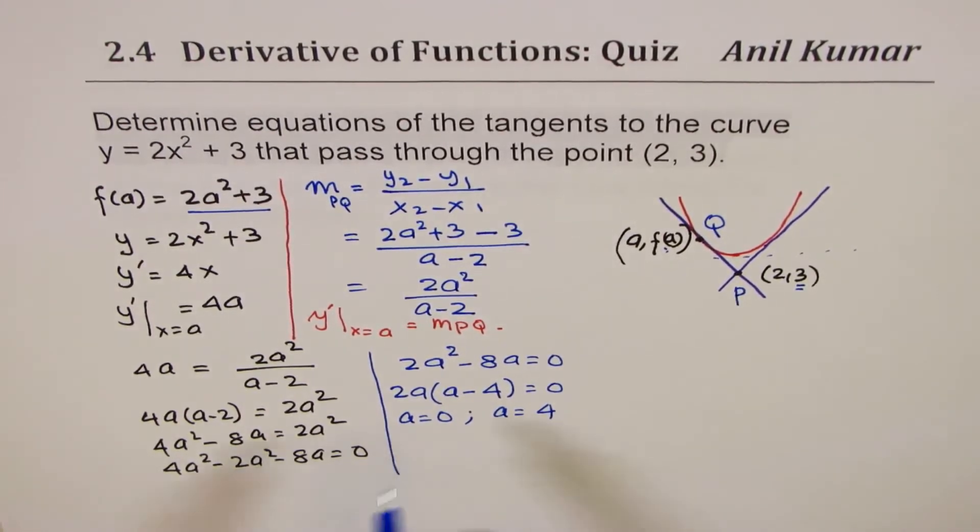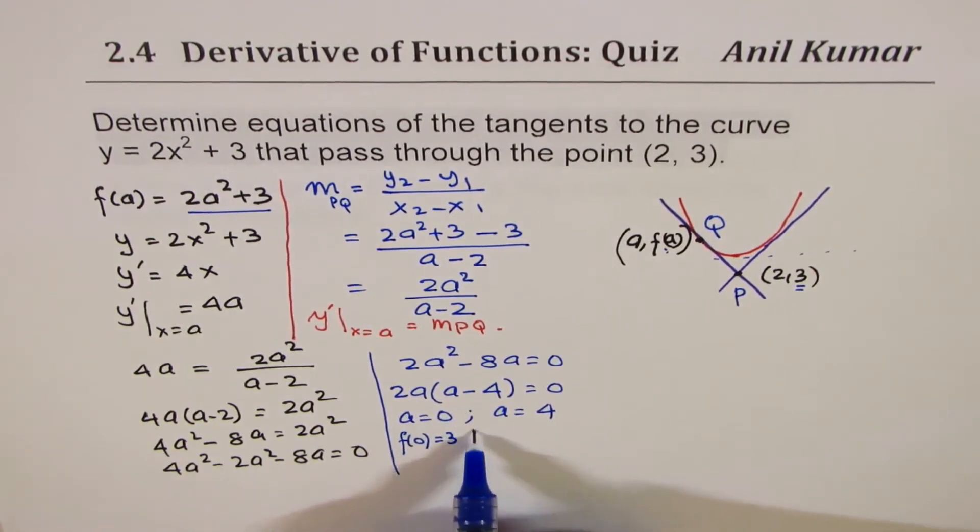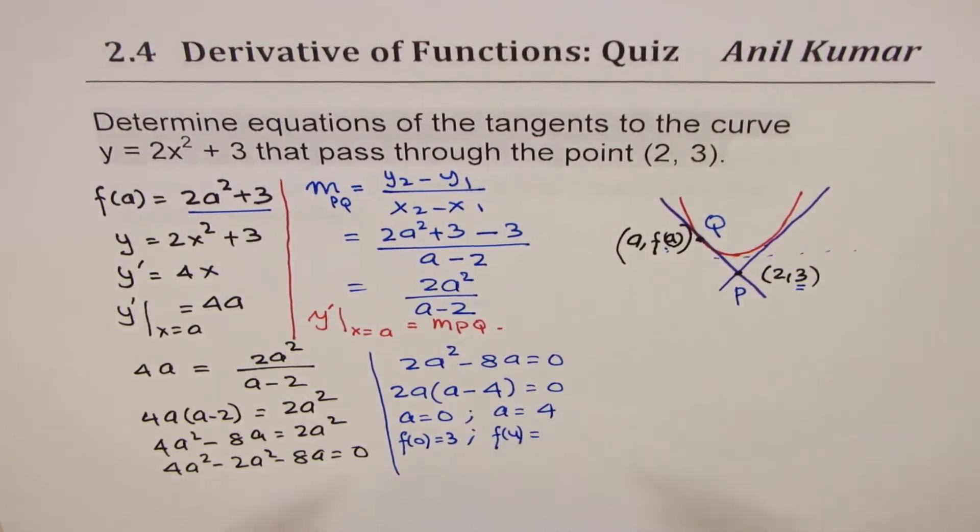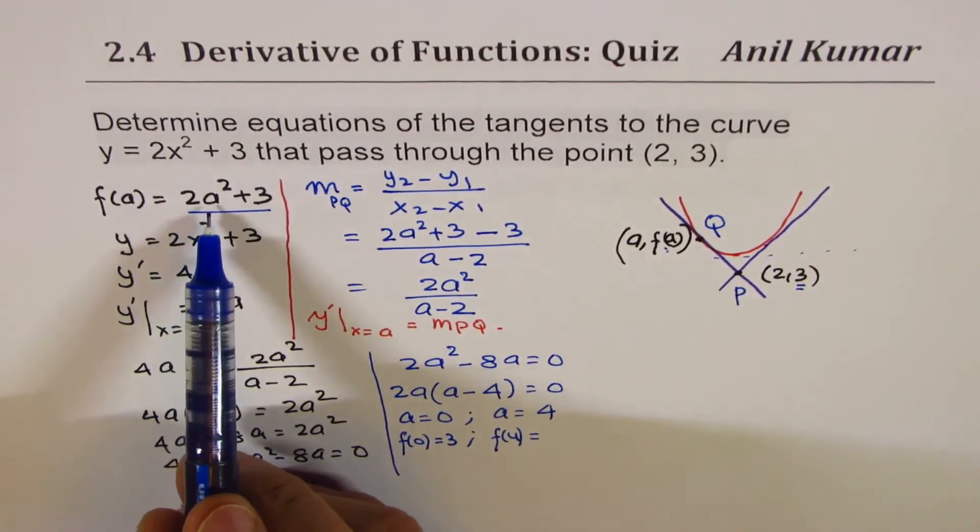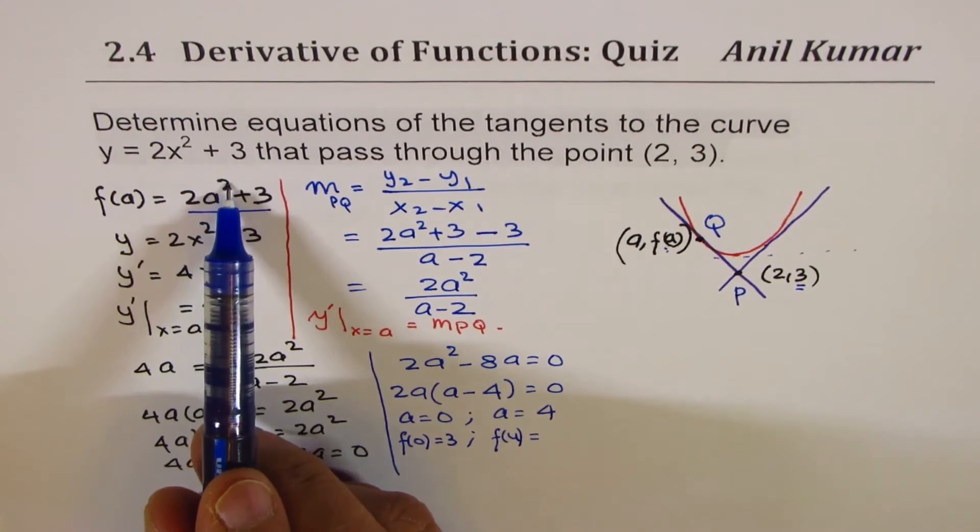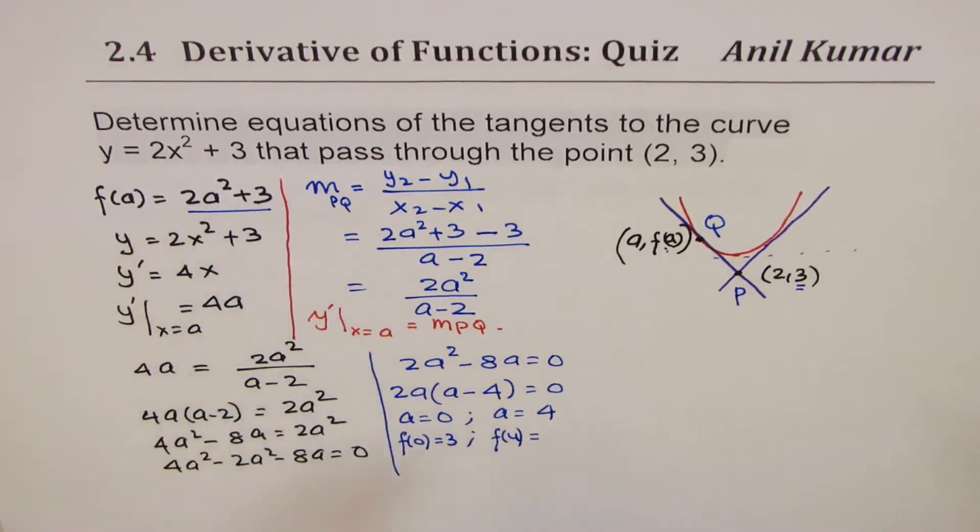Now, if a is 0, what is f(0)? f(0) is 3. So if a is 0, we have f(0) equals 3. So we have one point. And if a is 4, then what is f(4)? Substitute 4 here. 4 squared is 16, times 2 is 32, plus 3 is 35.